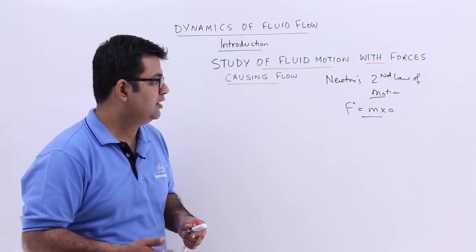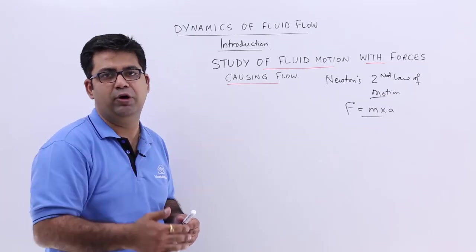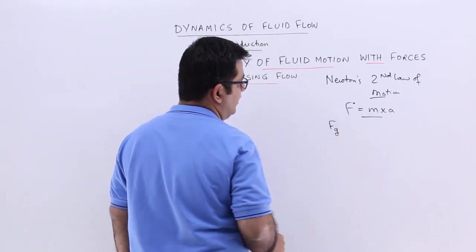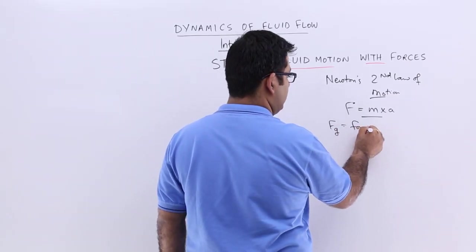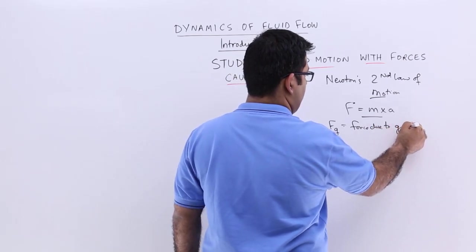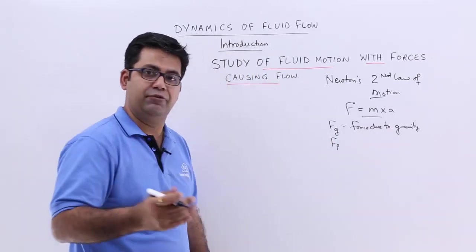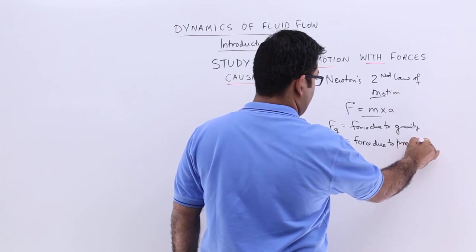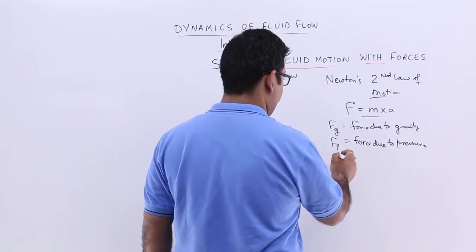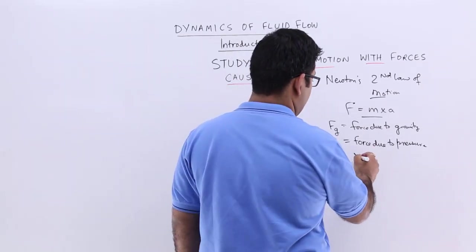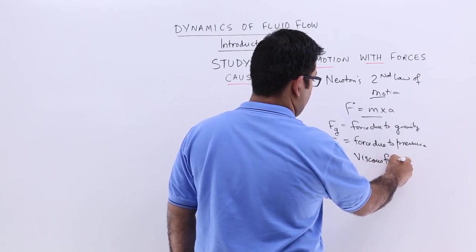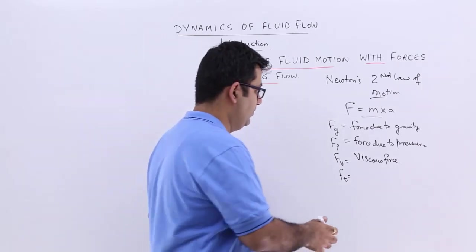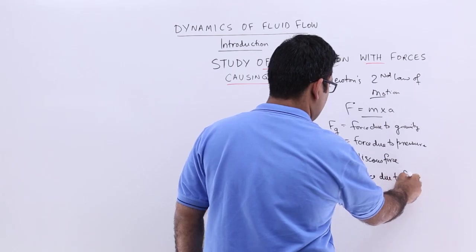Now, the forces that can act during a fluid motion — you can have a fluid flowing and the forces acting on it. First, there is the force due to gravity, Fg. We can have the pressure force, that is the force due to pressure. We can have the force due to viscosity — a viscous force. Then we can have the force due to fluid turbulence.